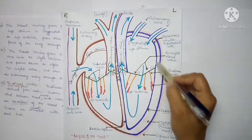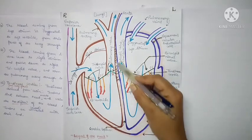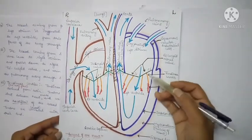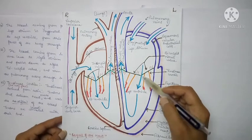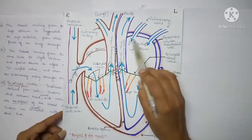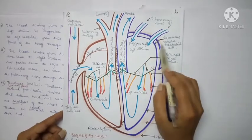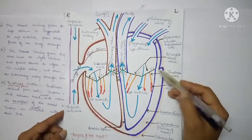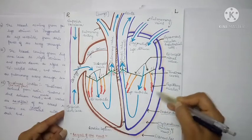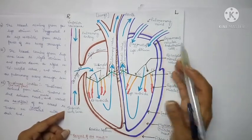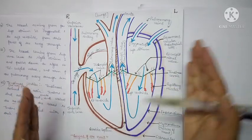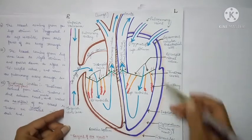Then there is the inner layer — this is called the endocardium, meaning 'inner.' This inner layer is made of squamous vascular endothelial cells. Inside this, you will also see striated muscles, which are responsible for contracting the heart.